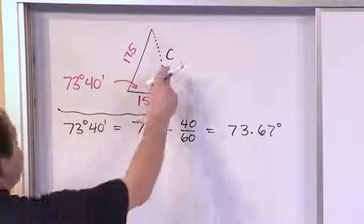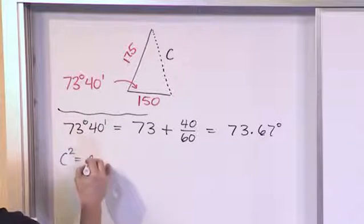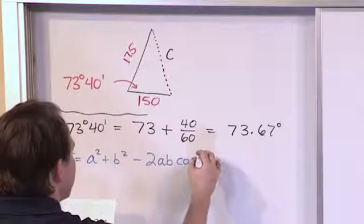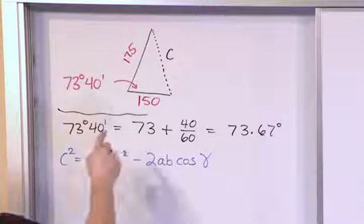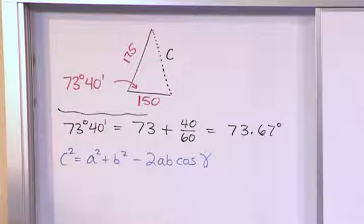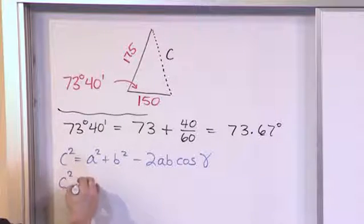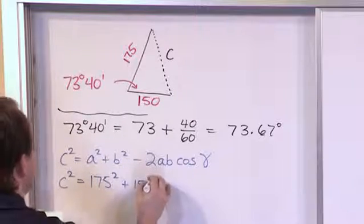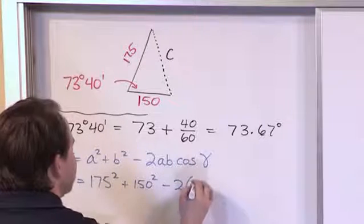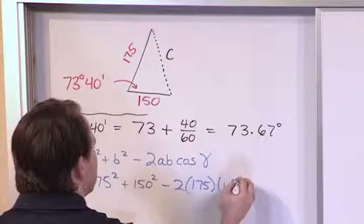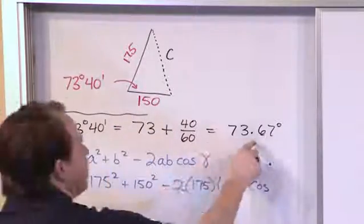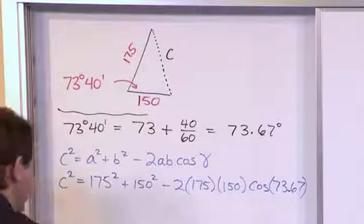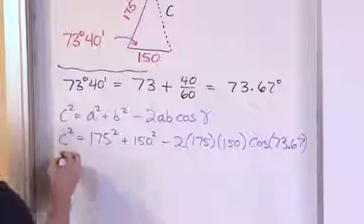Let's use the law of cosines: c squared equals a squared plus b squared minus 2 times a times b times the cosine of whatever angle lies between a and b. Since a and b are given and I know the angle between them, this should be straightforward. So c squared equals 175 squared plus 150 squared minus 2 times 175 times 150 times cosine of 73.67 degrees. Now I can calculate that cosine and solve for c squared.